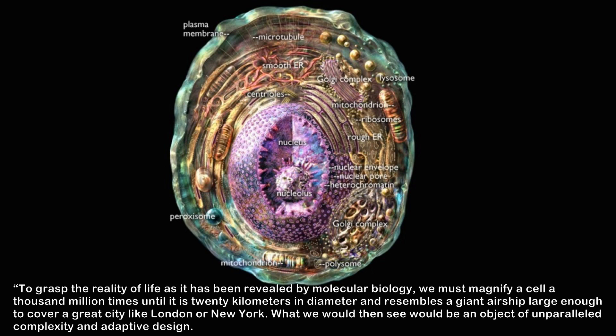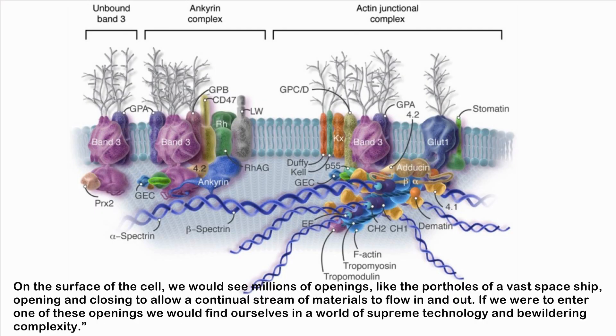To grasp the reality of life as it has been revealed by molecular biology, we must magnify a cell a thousand million times until it is twenty kilometers in diameter, resembling a giant airship large enough to cover a great city like London or New York. What we would then see would be an object of unparalleled complexity and adaptive design. On the surface of the cell we would see millions of openings, like the portholes of a vast spaceship, opening and closing to allow a continual stream of materials to flow in and out.